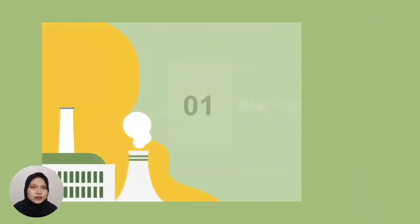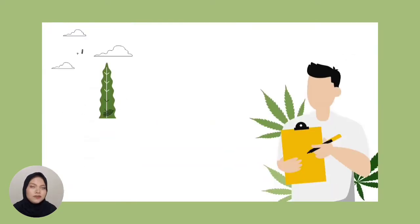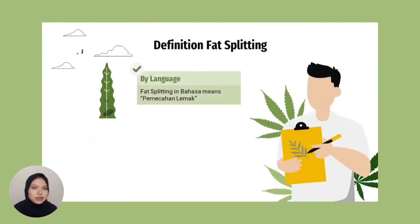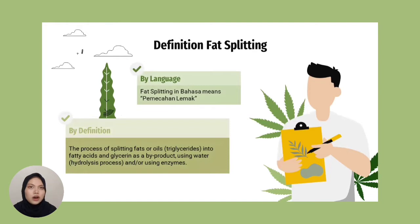First, we need to know what is fat splitting. The definition of fat splitting — in Bahasa we say pemecahan lemak — is the process of splitting or breaking down fats, oils, or triglycerides into fatty acids and glycerin as a by-product, using water (a hydrolysis process) and/or using enzyme.